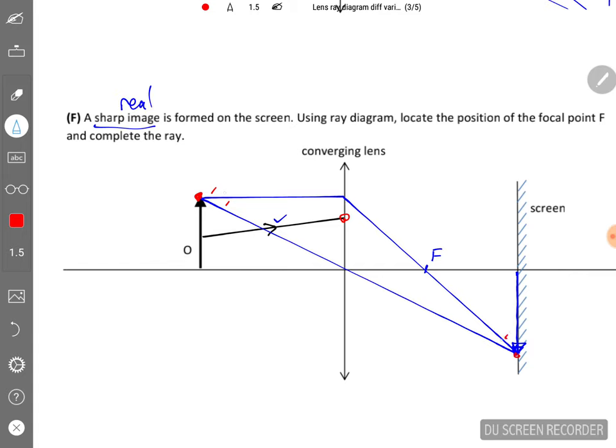It will fall on the tip of the image here to form the image. But for this ray that you're supposed to complete, it started off from the center of the object. So it should go to the center of the image, so roughly around here.